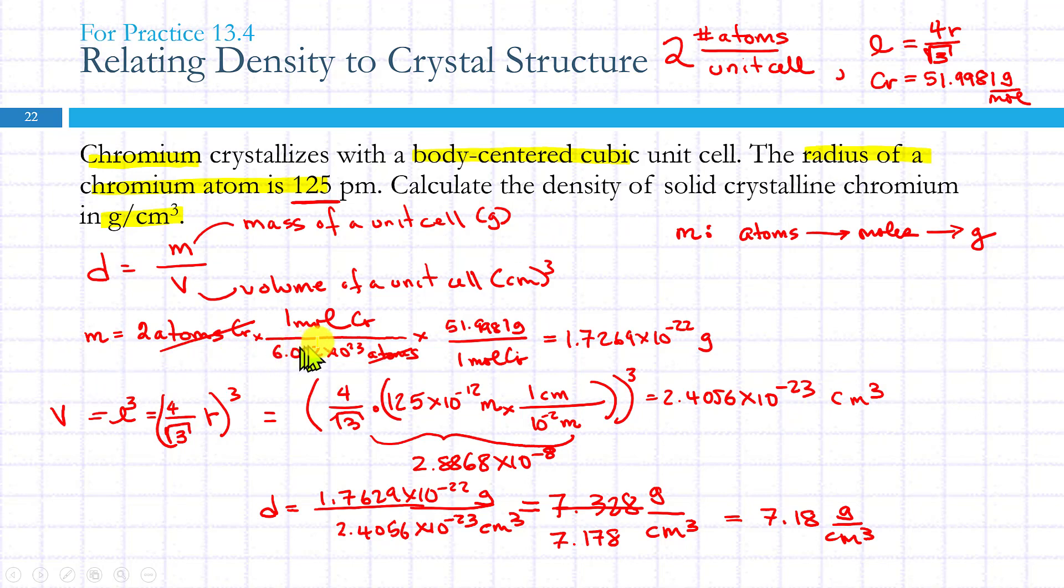Then I can calculate the mass of the unit cell based on my dimensional analysis, converting atoms to moles to grams. And then the volume gets calculated by knowing the unit cell length, and that comes from knowing that it's a body-centered cubic unit cell. This information comes from that table that we looked at, and this is simply the molar mass of chromium.